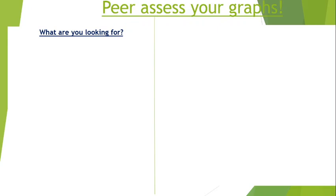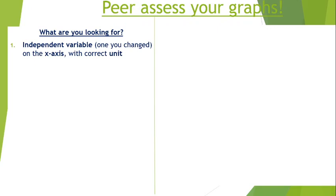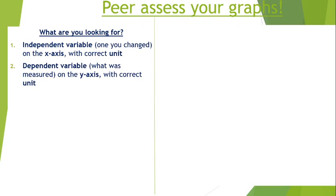Here's what I'm looking for. I've put peer-assess graphs at the top — I appreciate that might not be appropriate, and it might make more sense to assess your own. However, if you can see each other's work, hold it up and peer assess — they can give you verbal feedback and you can write that in green. I am looking for the independent variable — whatever you changed — on the x-axis. Remember your song: independent variable goes on the x-axis. And if it has a unit, you need to put it.